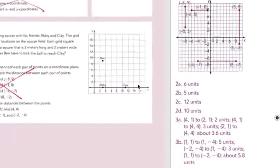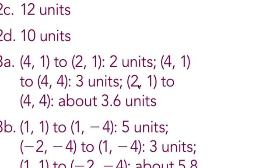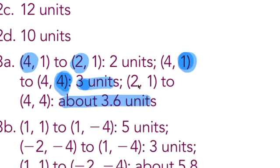Number three: notice to find the units they just subtract 4 minus 2, right, and then 4 minus 1 to get the 3 units. And then they have to do Pythagorean theorem to find from one to two and four to four.